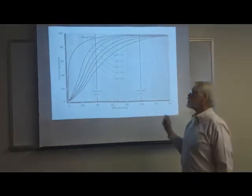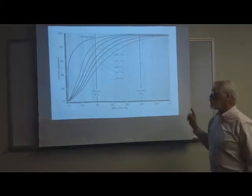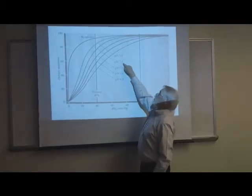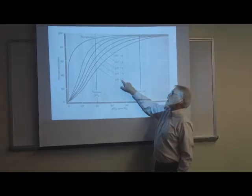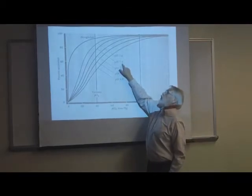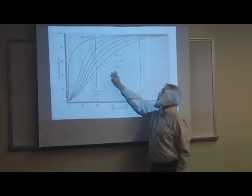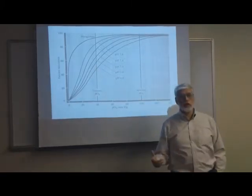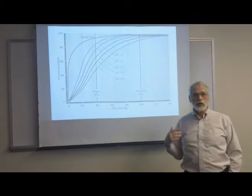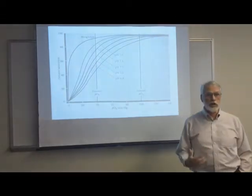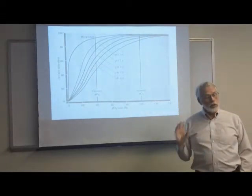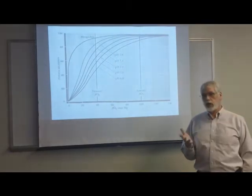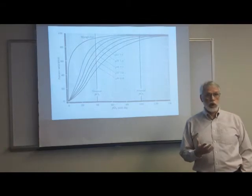This pH effect is called the Bohr effect, and you see it right here on this diagram. Notice that these are relatively small changes in pH — from 6.8 to 7 to 7.2 to 7.4 to 7.6 — and yet there are big changes in the saturation of hemoglobin, or big changes in its ability to bind oxygen. This is very critical in terms of functioning, and that's why maintaining the pH of the blood is a very important process.